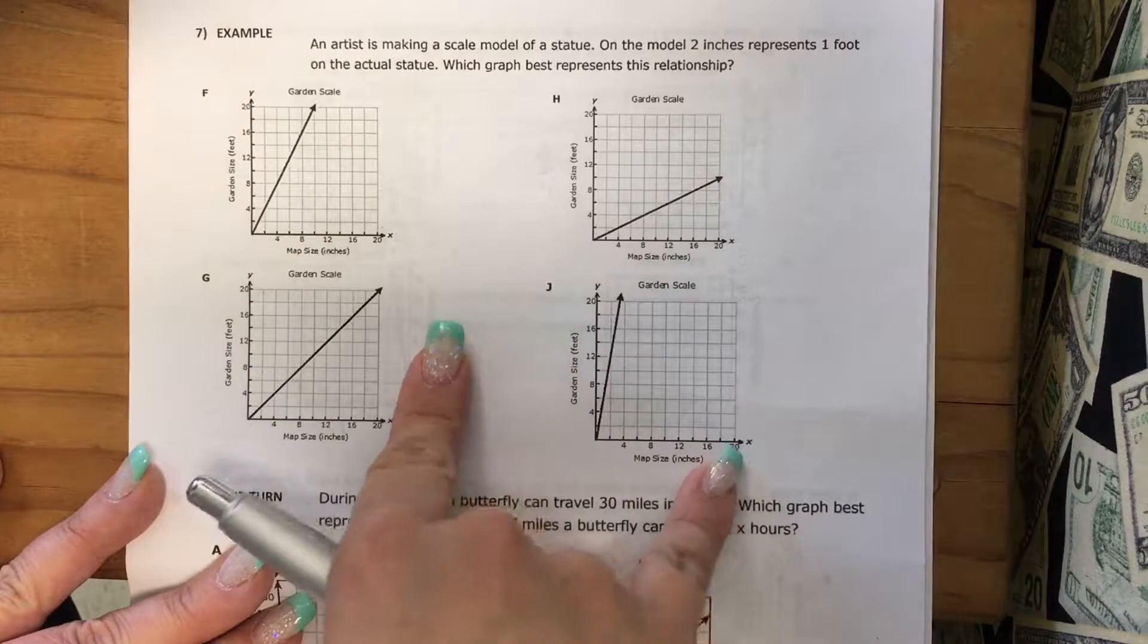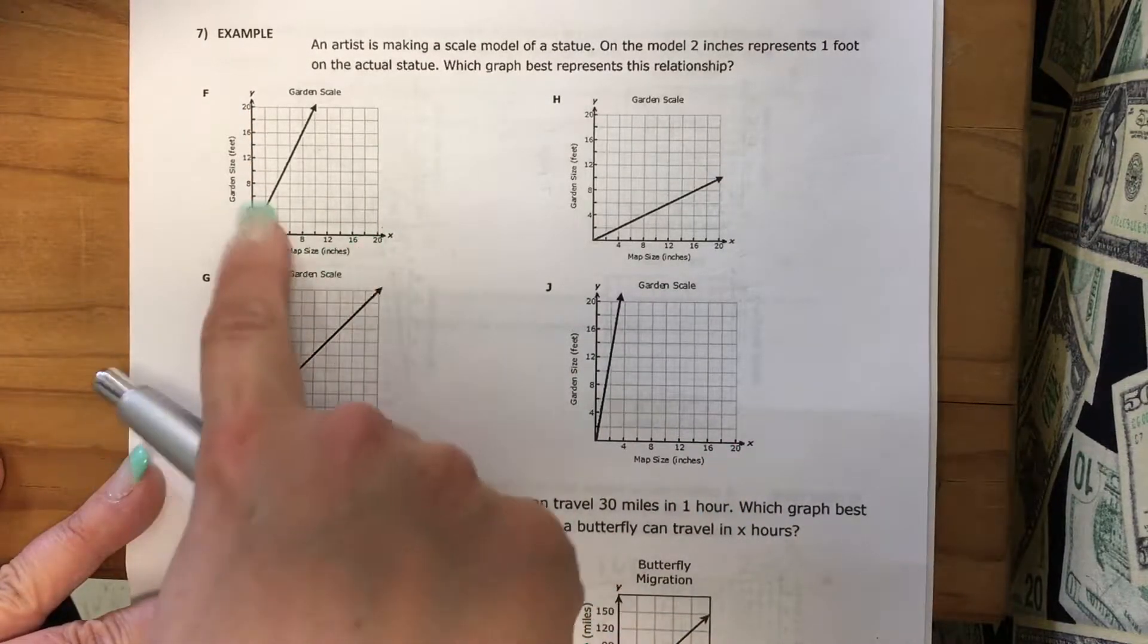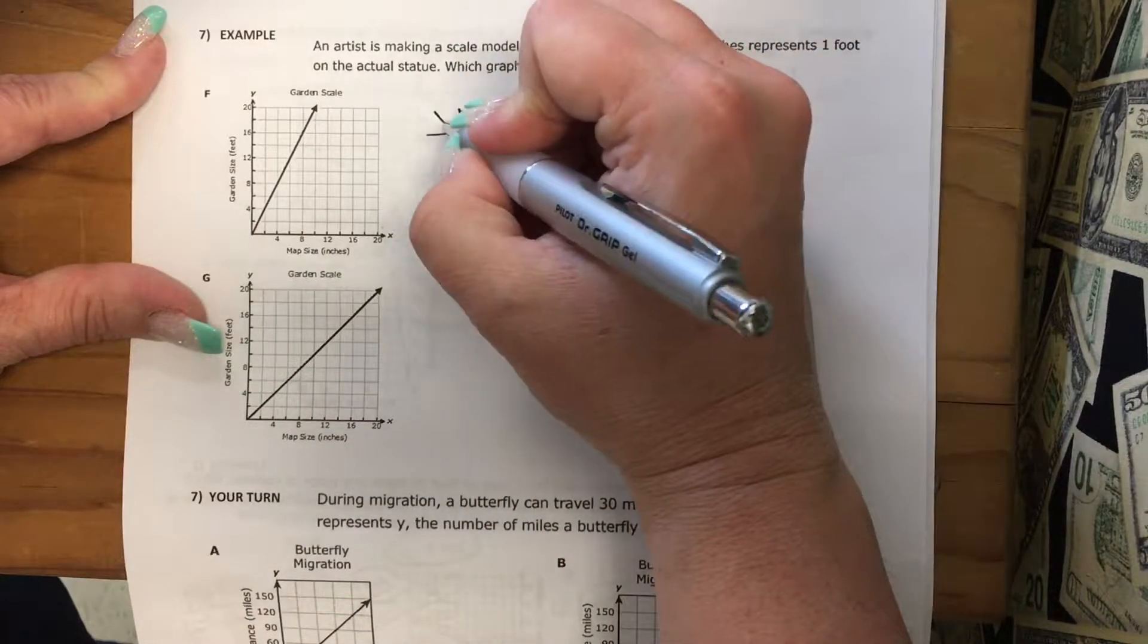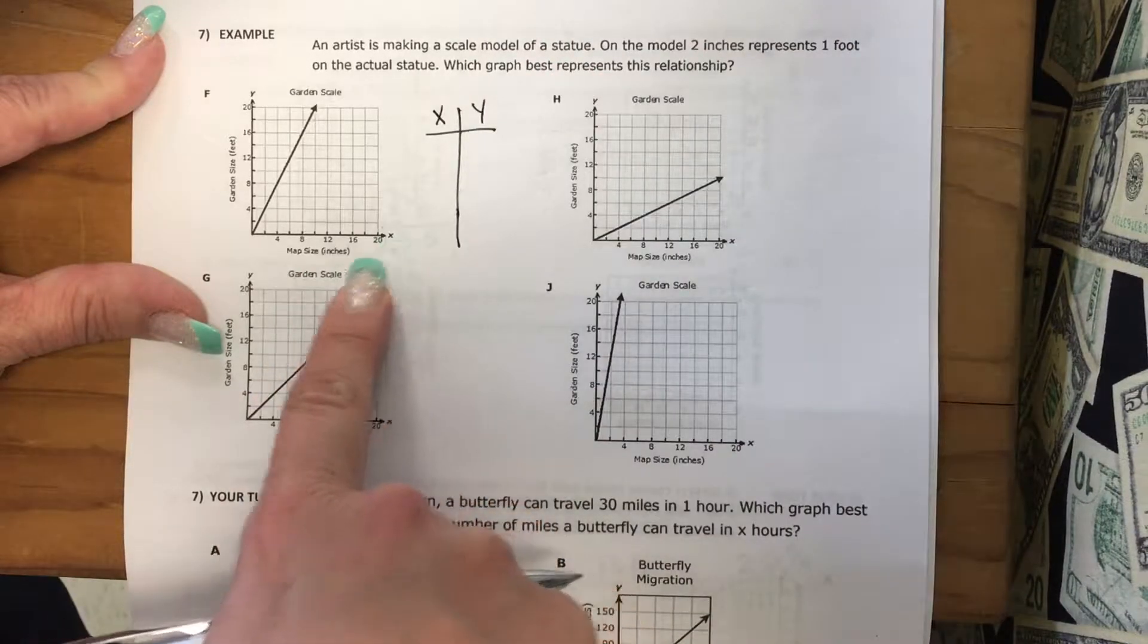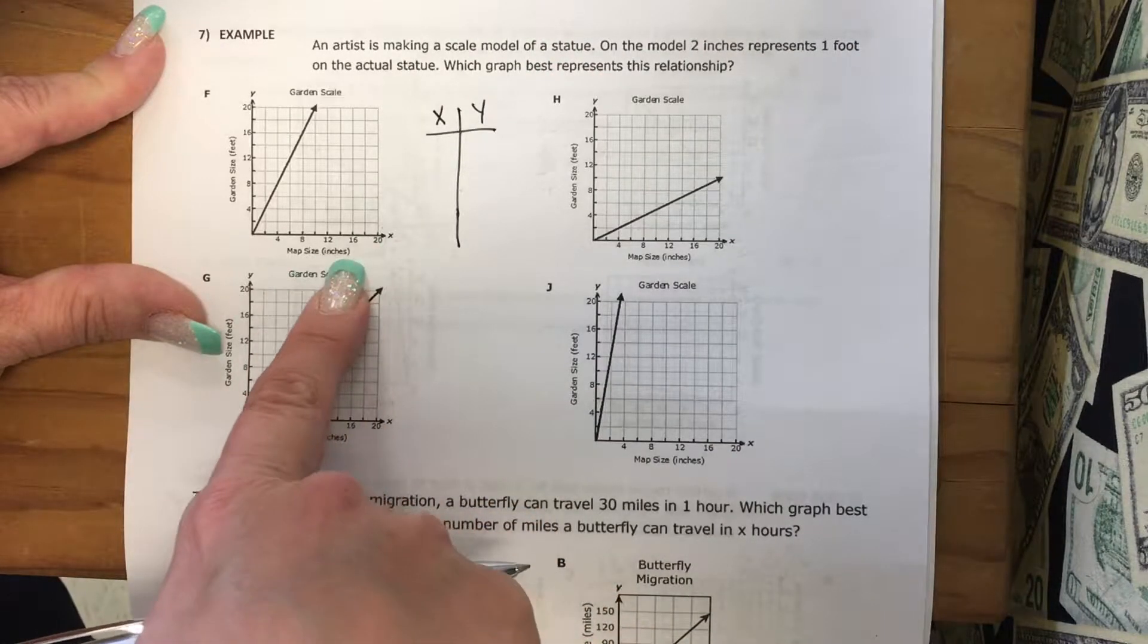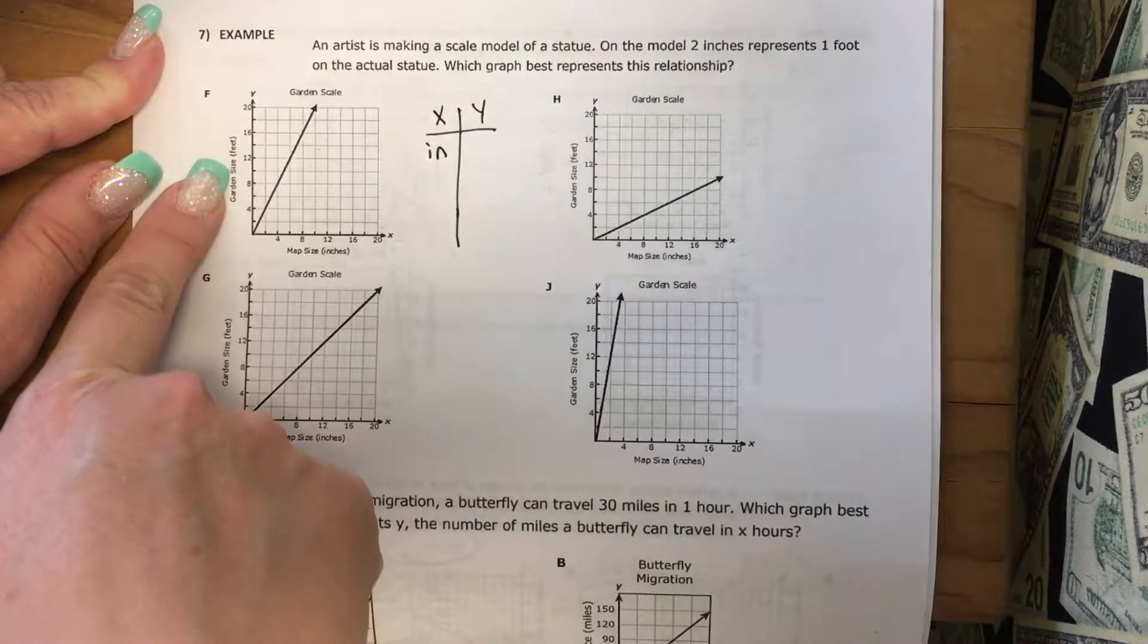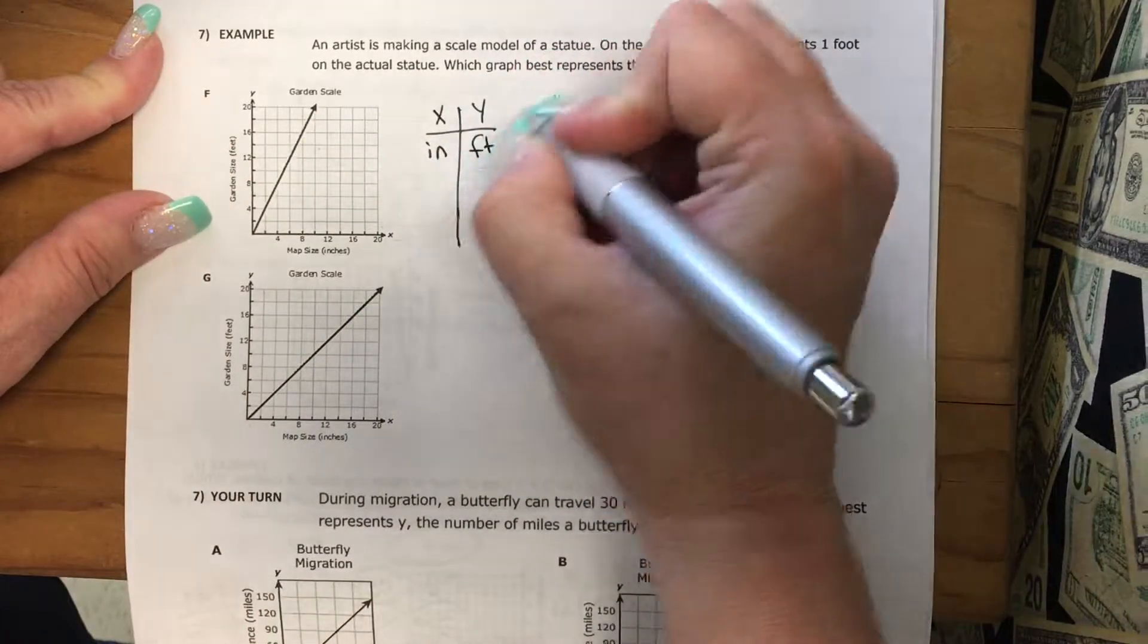Our graphs are made up of the x-axis and the y-axis, and we want to know what points are on the graph. So I would just make a little table. We have our x's and our y's. On our x-axis, we have the map size in inches. On the y-axis, I have the garden size in feet.